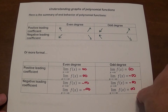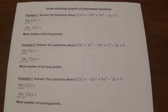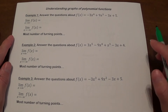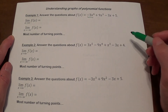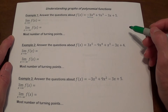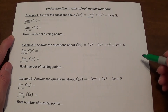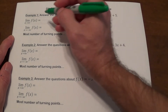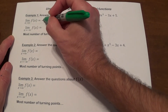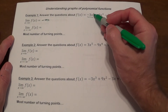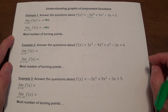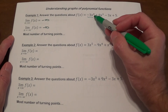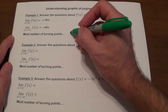Let's take a look at some examples. The first example: we need to determine the end behavior and also the maximum number of turning points. We don't care about anything else besides the leading term — the one with the highest degree of x. Negative leading coefficient means the right end, as x goes to infinity, is going to go to negative infinity. The degree is even, so the left end does the same thing and goes to negative infinity as well. The degree here is 4, so the maximum number of turning points is 1 less, which means 3.